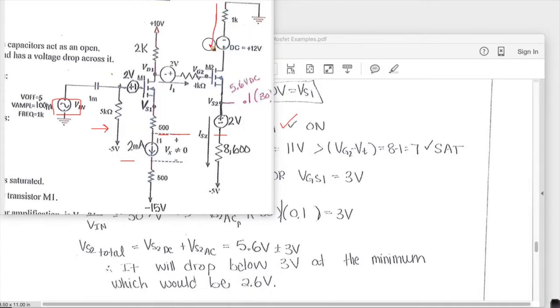And then VD2 we can find, so VD2 is the loop through here and this is going to be plus to minus of the IS2 that we found previously and that was about 1 volt or 1 milliamp.